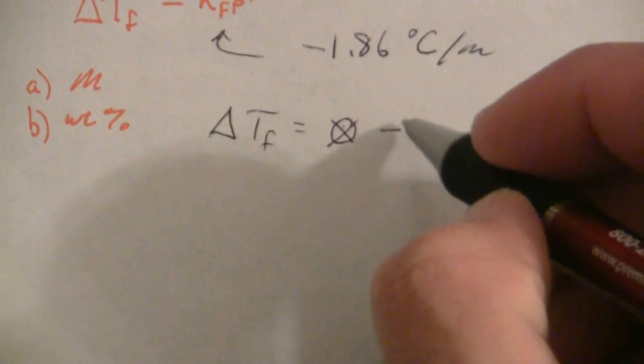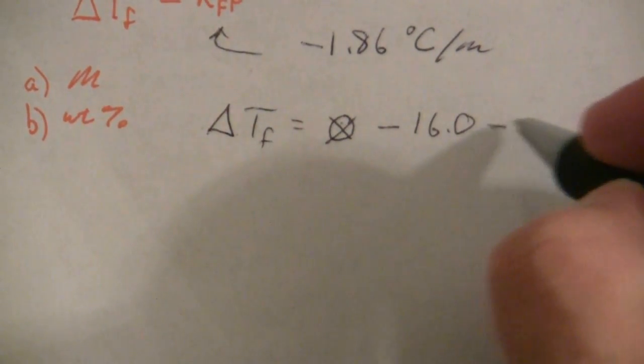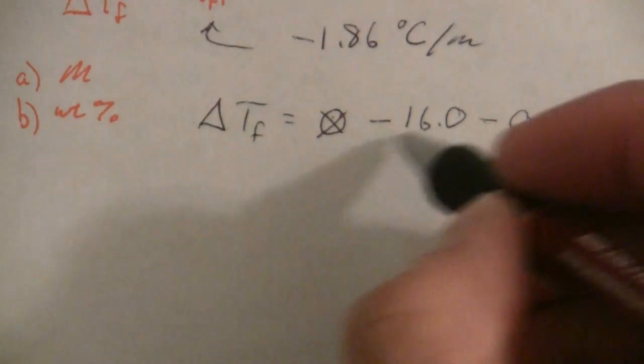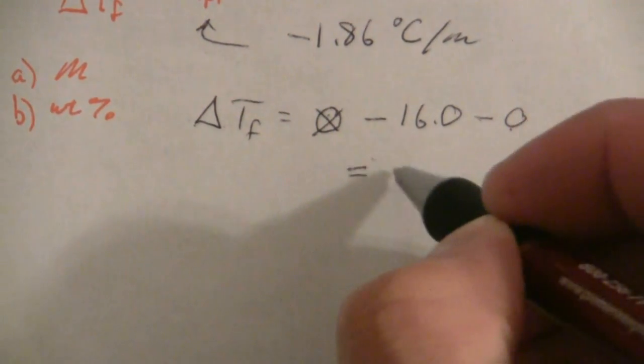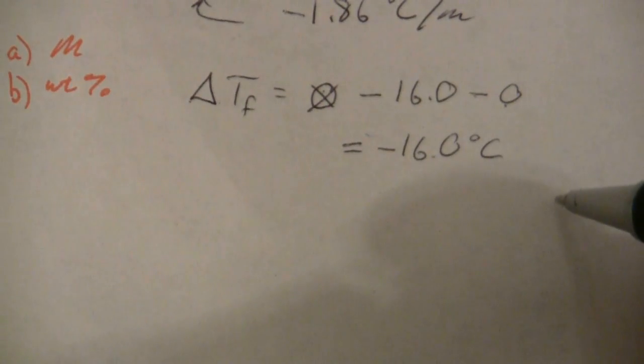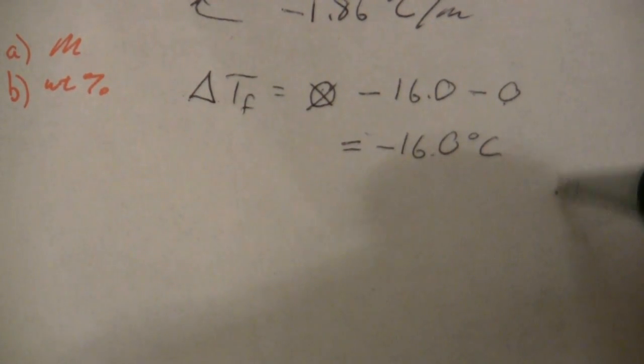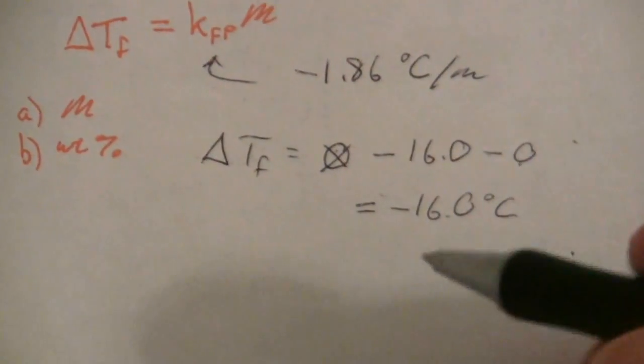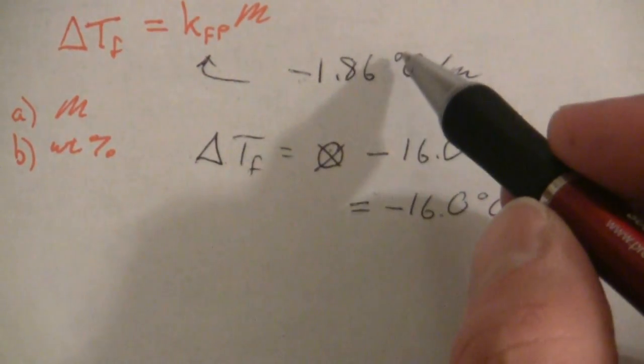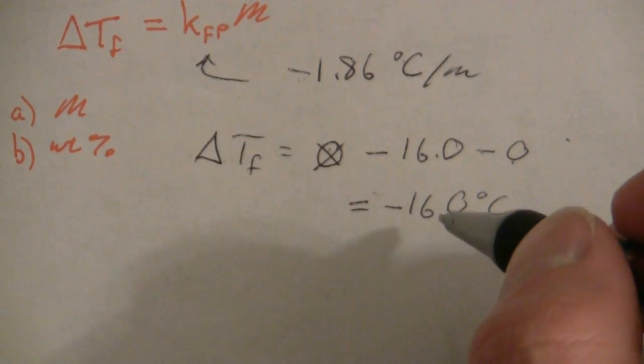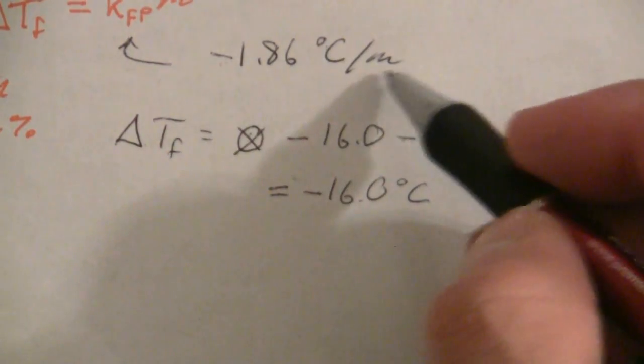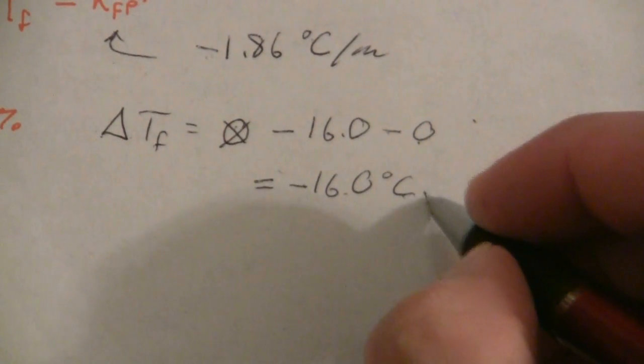Obviously, this is just equal to negative 16.0 degrees C. The change is dropping, so it's negative, dropping down 16 degrees from 0 to minus 16. The signs will cancel; this means there's a drop of 1.86 degrees C for every molal in the concentration.